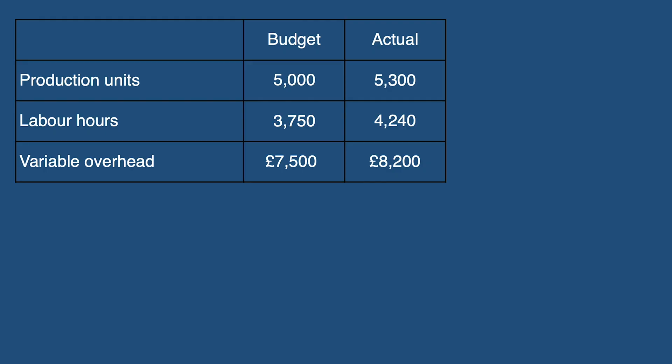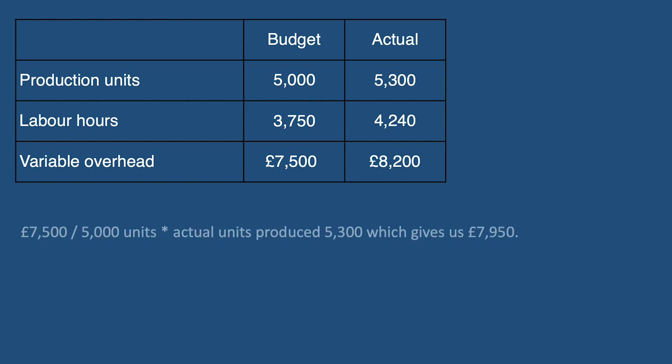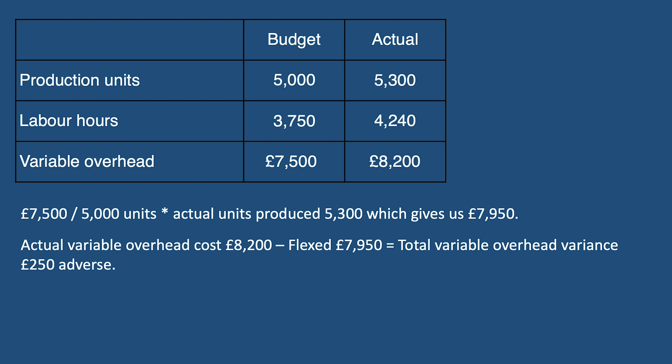The variable overhead expenditure variance and variable overhead efficiency variance should add back together to come to the overall variable overhead variance had we just flexed the cost from the budgeted amount to the actual amount. Our final check is to make sure the numbers reconcile. First, let's flex the variable overhead cost: this would be £7,500 divided by 5,000 units and then multiplied by the actual number of units produced of 5,300, which gives us £7,950. The actual cost of those units was £8,200, giving us a total variance of £250 adverse.